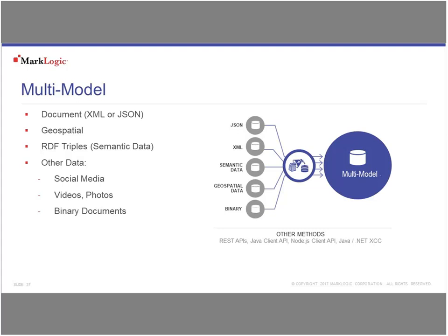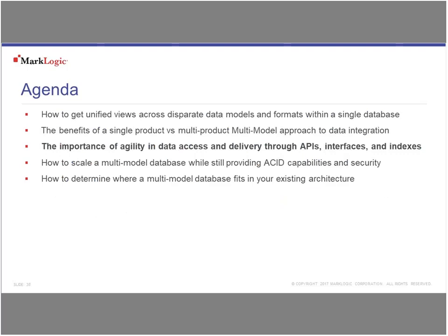Just to do a time check — we're a little bit over halfway through. We've talked about how to get unified views across disparate data models and formats within a single database. From a relational perspective, I would have to spend weeks, months, or even years designing a data model that could accommodate every different type of format — having every fight throughout the entire marriage in that first design section. But with the flexibility of the document database, I can literally dump everything in there without regard to what it is, and then begin to refine it over time. Because I'm maintaining that original content, I'm never changing it — and if I make a mistake, I just go back to my document section and reconstruct it a different way.